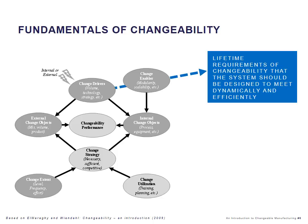In order to develop changeable manufacturing systems, the first step is to determine and evaluate the lifetime requirements of changeability that the system should be designed to meet dynamically and efficiently. So we do not only make manufacturing systems suited for one product or the immediate situation, but we try to assess the change drivers imposed on the system in the long term in order to make a system that is dynamically changeable through, for instance, reconfigurability.